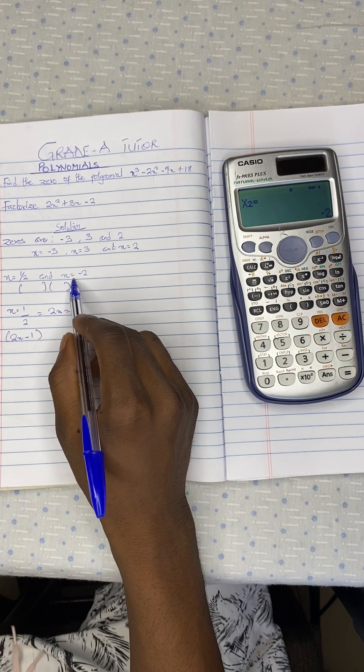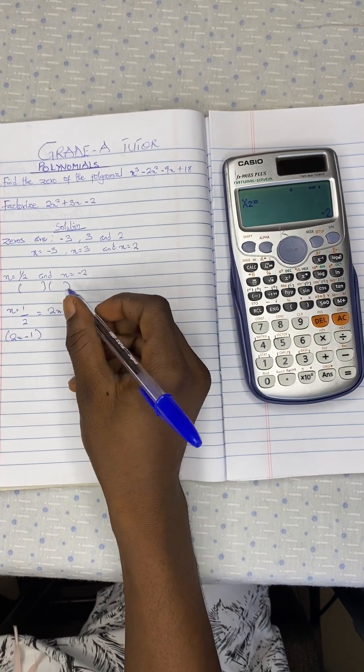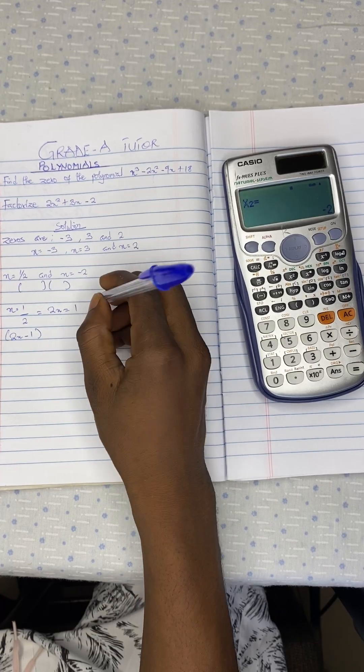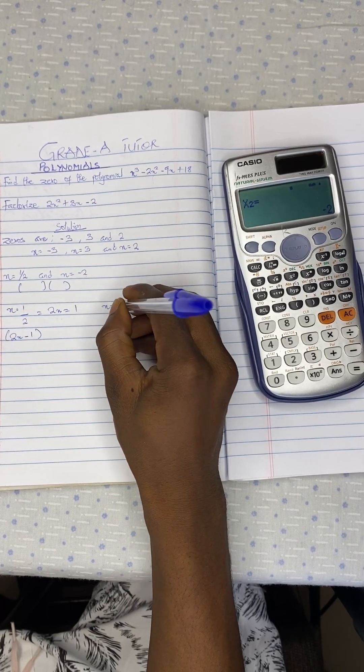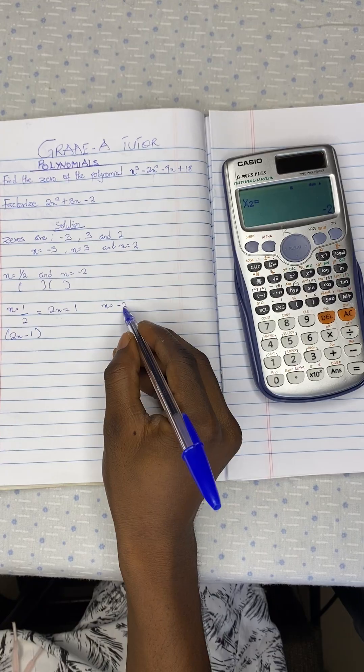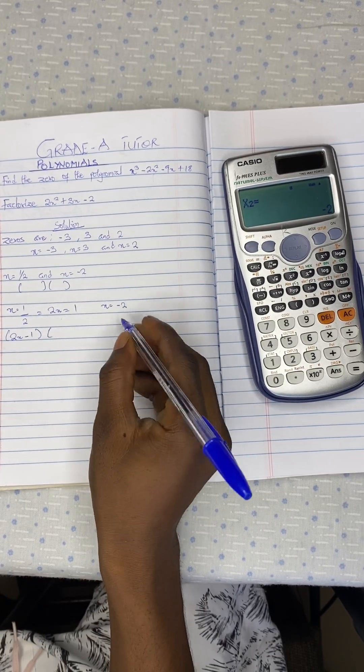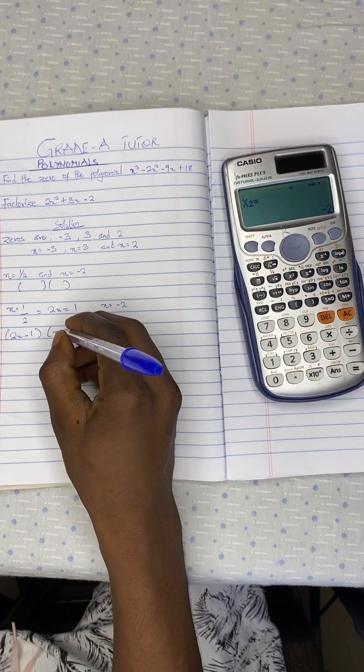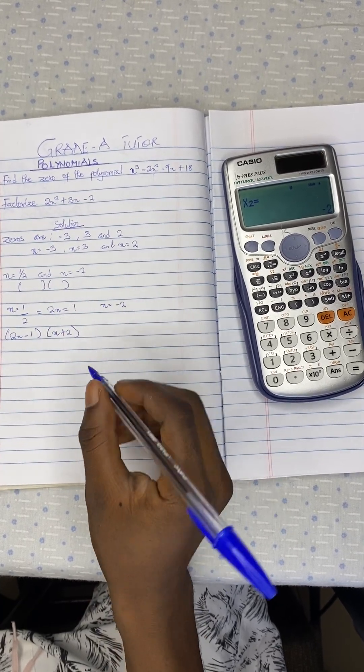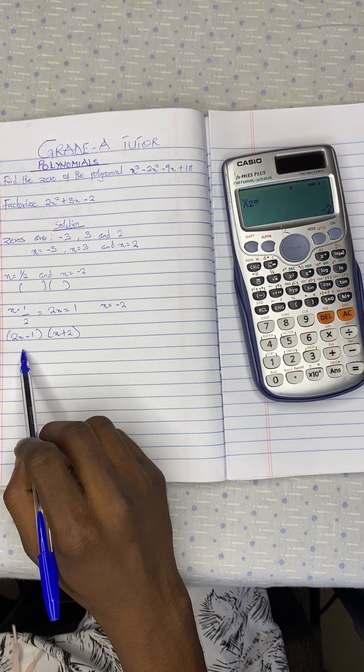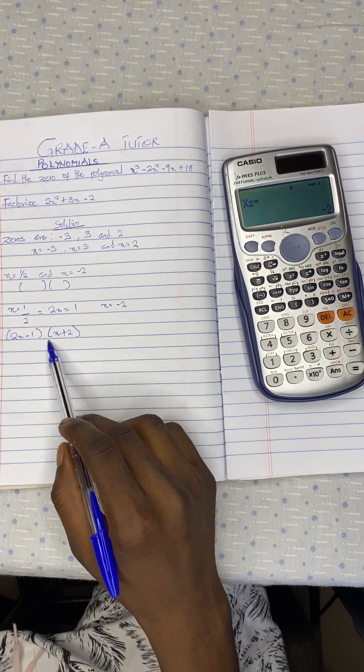Then we do the same for x equal to negative 2. Because there is no fraction, it is going to be simple. We just want to bring this negative 2 to the left hand side, so we are going to get x. When this crosses, it becomes positive. So the factorization becomes 2x minus 1 in one bracket, x plus 2 in another bracket.